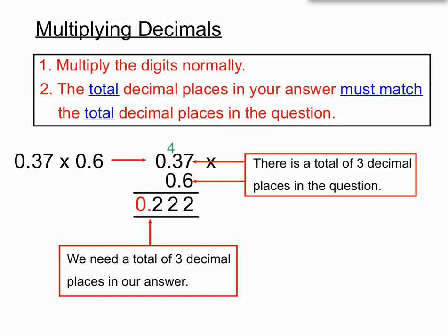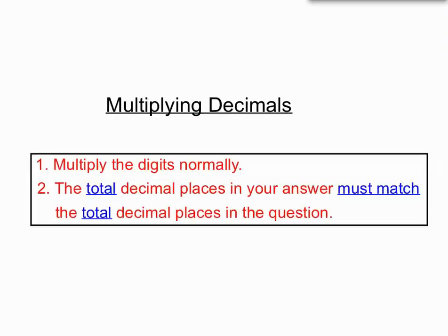The total number of decimal places in the answer must match the total number of decimal places in the question. Other than that, it's just multiplying digits normally. Multiply the digits normally, then add up the total decimal places in your question and make sure your answer matches that. It's a little bit tricky, but just concentrate on having those decimal places match.